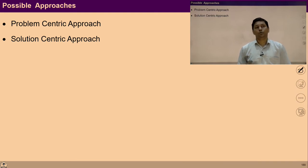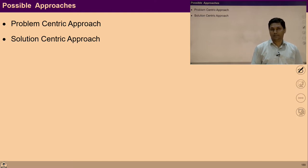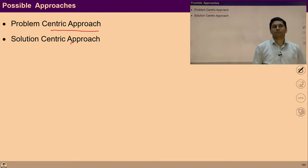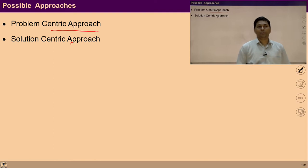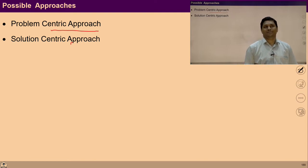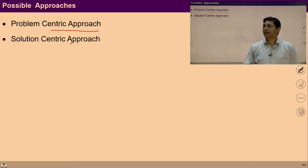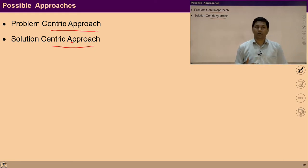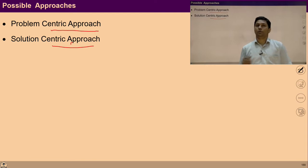So there are two possible approaches when we are going to critically analyze the present state. Number one, problem-centric approach — meaning we are only focusing on the problems and trying to find out their solutions. And in the solution-centric approach, we focus on the solutions and try to evaluate the problems as an absence of the solutions.